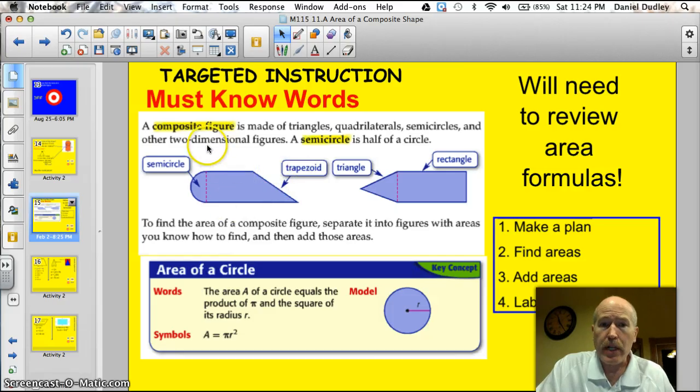Let's review some vocab for tonight. Composite figure. That's a figure made of triangles, quadrilaterals, semicircles, and other two-dimensional figures. Here's a semicircle. That's a half of a circle. So to find the area of this composite figure, you'd find the area of the trapezoid and the area of the semicircle. To find the area of this composite figure, you'd find the area of the triangle and the area of the rectangle. Then you add them together.